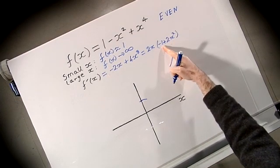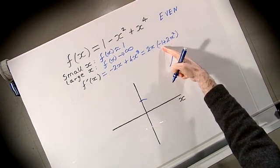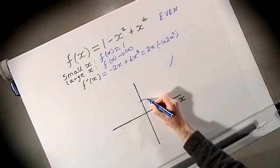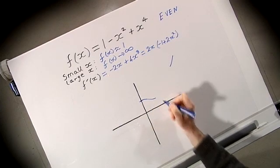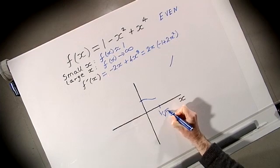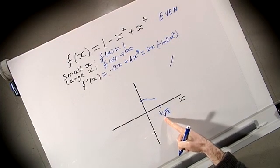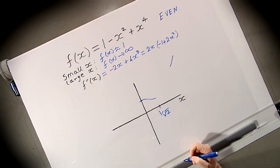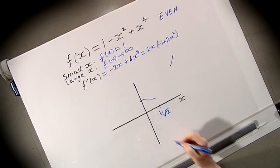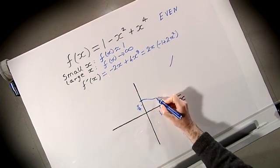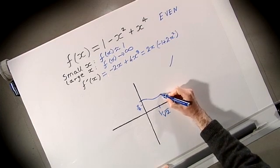When x is equal to 1/√2, the derivative is 0, so we have a minimum at x = 1/√2. Plugging that into the original function, we find that f(1/√2) = 3/4. So the function has a minimum at that point.